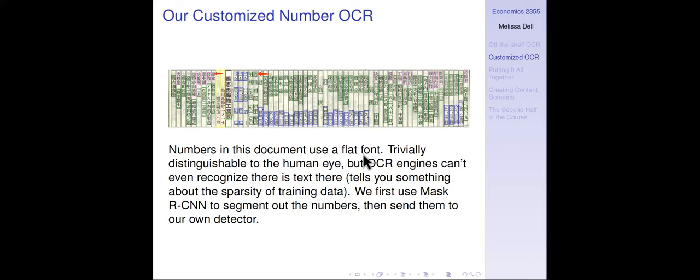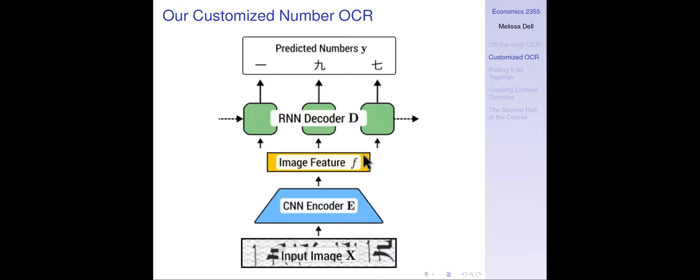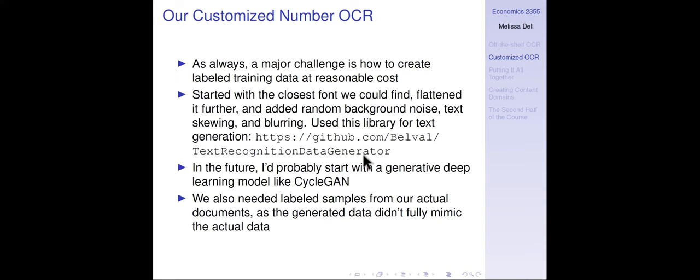What we did was use Mask RCNN to detect and segment out the numbers. On the image, green is text and blue boxes are numbers, and we segment those out. Then we send them to our own detector — similar to what we covered in class — where you have an input image, feed it through a CNN, subsequently feed it to an RNN, and that predicts numbers. You could probably integrate this with Mask RCNN and save some compute by doing it end to end, but that's essentially the idea.